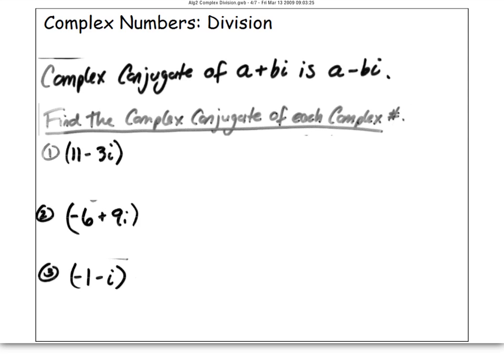A complex number is a plus bi. Its conjugate is a minus bi. All you do is change the sign of the imaginary.